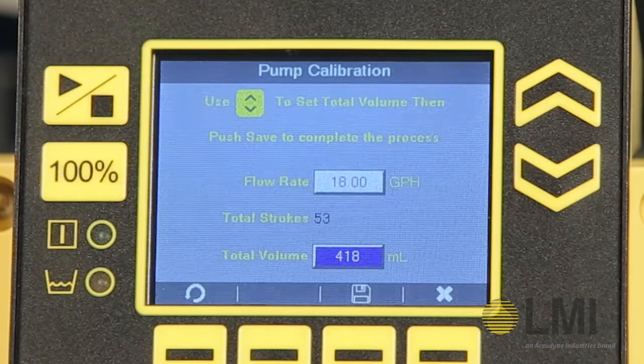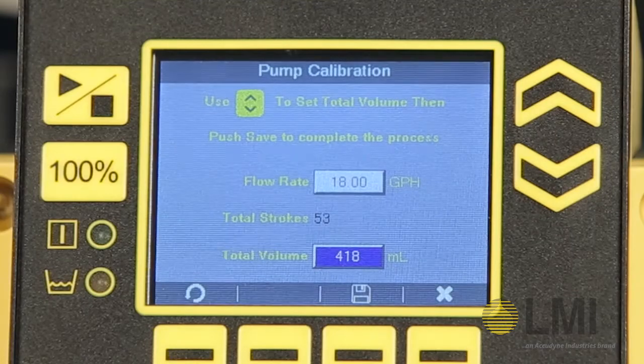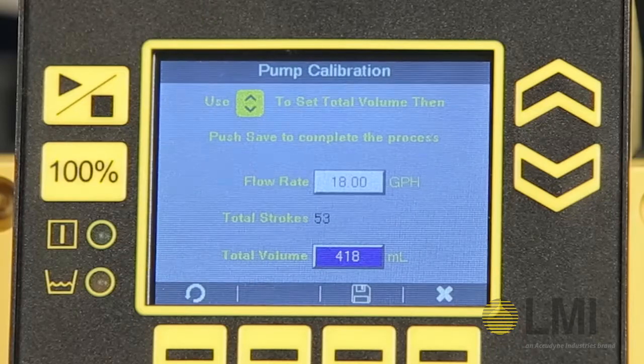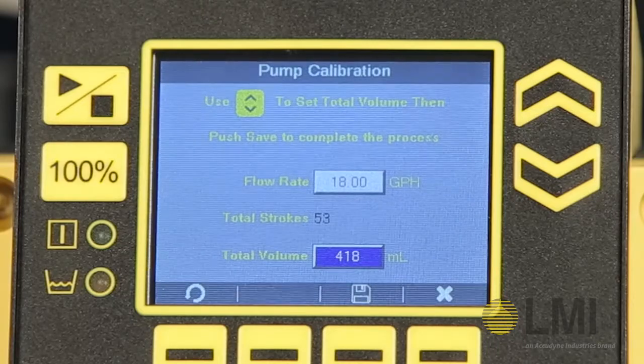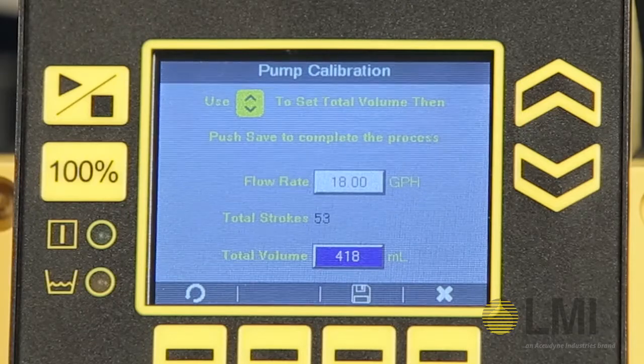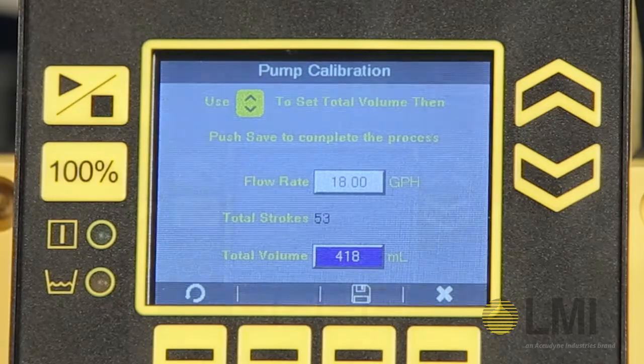With the pump stopped, you can now review the calibration settings. In this example, we will use the flow rate identified on our screen of 18 gallons per hour. The total stroke count is 53, with a total volume of 418 milliliters.